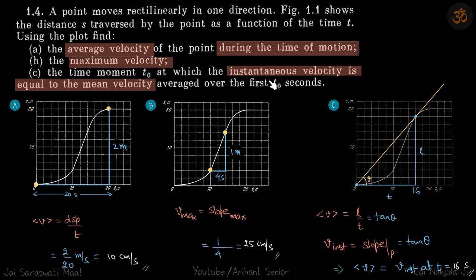Now in the third part, he is asking the moment T_not at which instantaneous velocity is equal to mean velocity. Instantaneous velocity is the slope of the displacement-time graph, and mean velocity is the total displacement divided by total time.